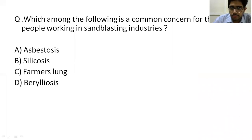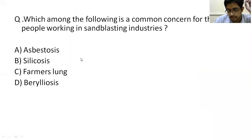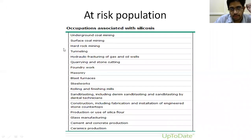Question: which is a common concern for people working in sandblasting industries? Options: A. Asbestosis, B. Silicosis, C. Farmer's lung, D. Berylliosis. The answer is silicosis. Asbestosis is associated with shipbuilding industries and asbestos cement sheets. The risk-factor occupations for silicosis include quarrying and stone cutting, foundry works, and sandblasting including denim sandblasting.